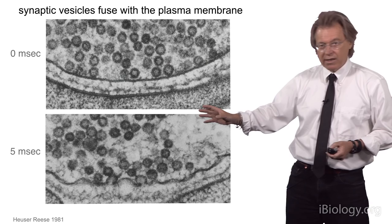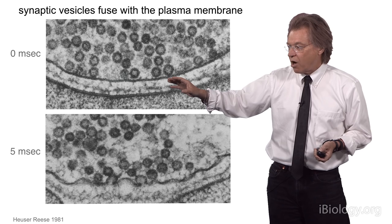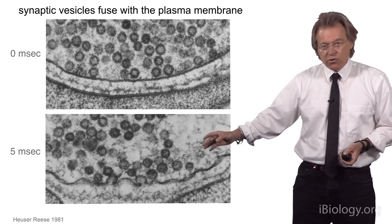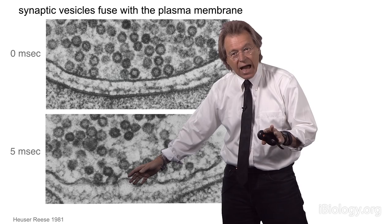So what did they see? Beautiful images. Here you can see an unstimulated neuromuscular junction with vesicles docked at the membrane. When they stimulated and then froze 5 milliseconds later, you see fusions that have occurred. Here's a vesicle that has just fused, here's another one, and here's one that's beginning to flatten out as it collapses into the plasma membrane.